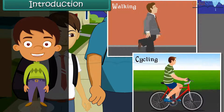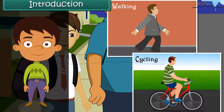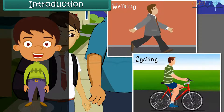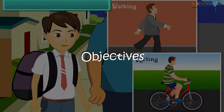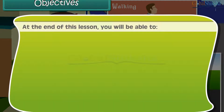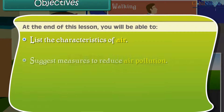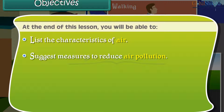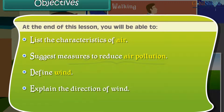In this lesson you will learn about air and its pollution. At the end of this lesson you will be able to list the characteristics of air, suggest measures to reduce air pollution, define wind, and explain the direction of wind.